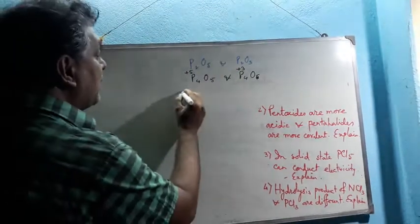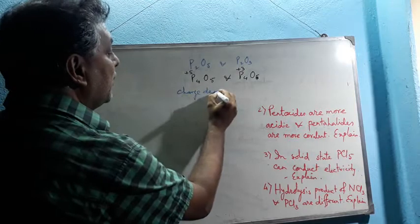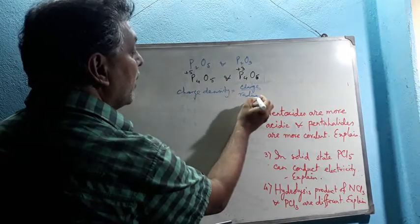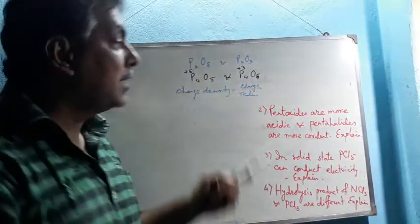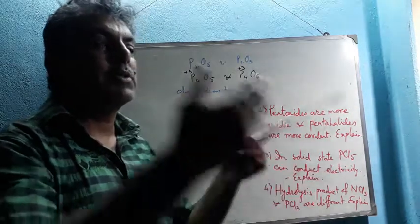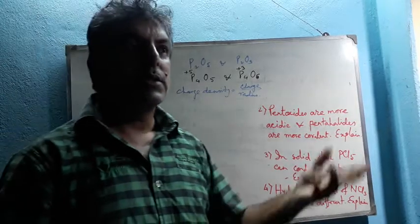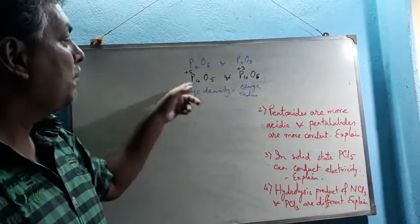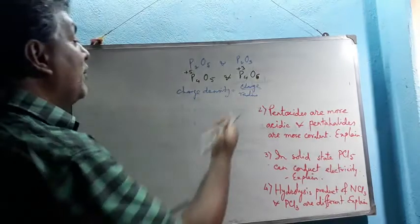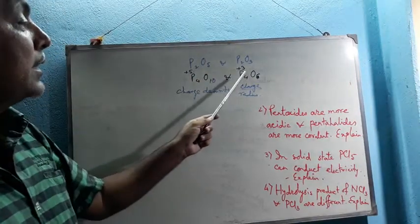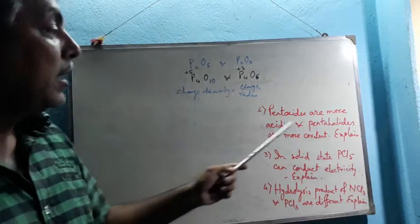With increase of positive charge over the central atom, charge density — calculated as charge/radius ratio — increases. Size contraction takes place with increasing positive charge, so the charge/radius ratio increases further. This higher charge density drags electron density from other substances towards it. According to Lewis theory, a substance that accepts electron density is a Lewis acid. Therefore, the acidic property of P4O10 is greater than that of P4O6, explaining why pentoxides are more acidic.